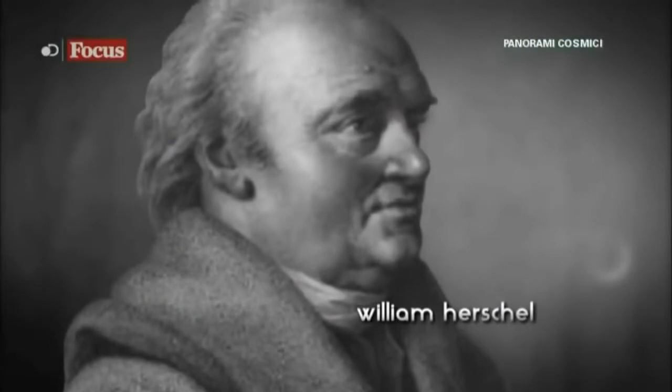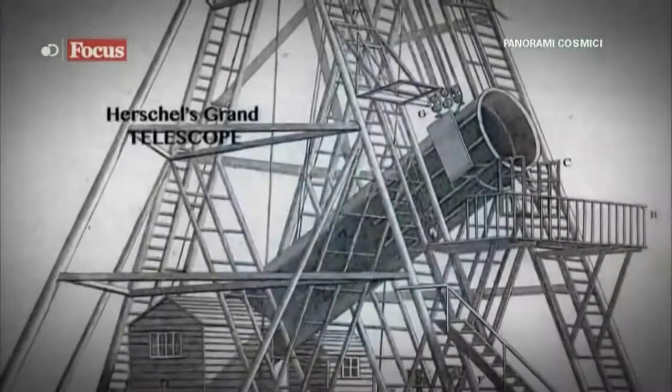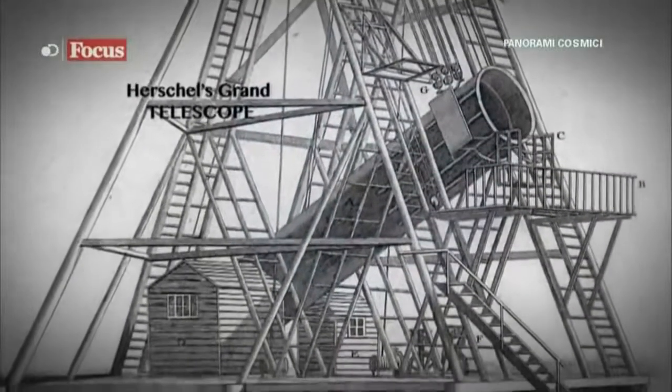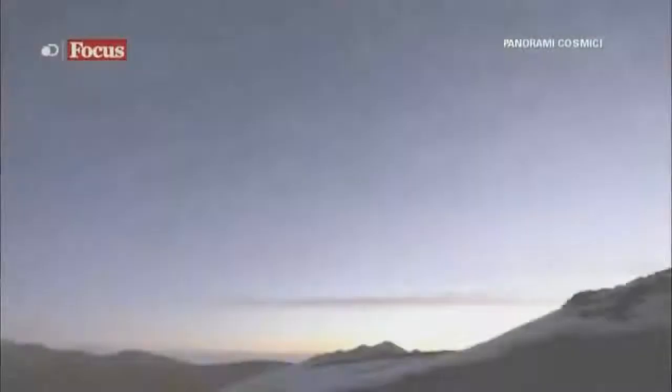Nel 1785, William Herschel, un musicista e astronomo tedesco che lavorava in Inghilterra, era già famoso per la scoperta di Urano.